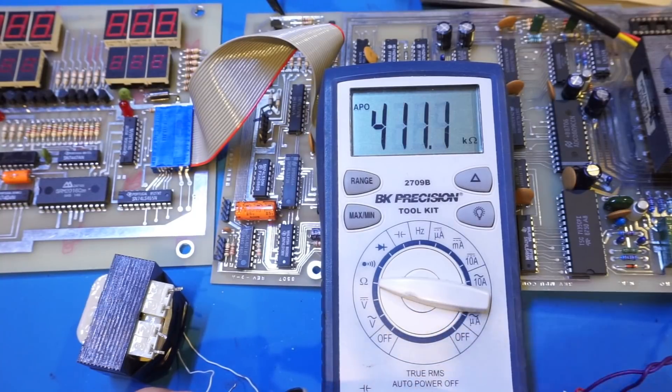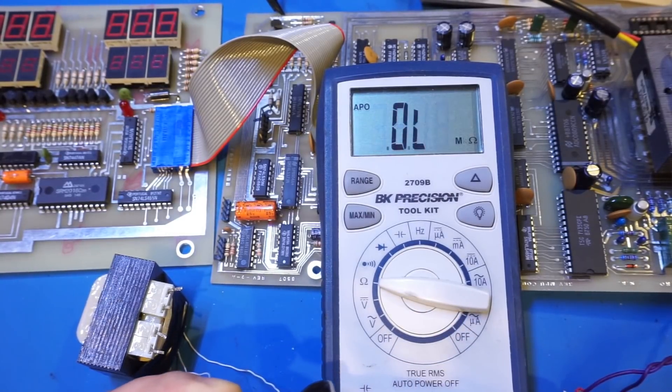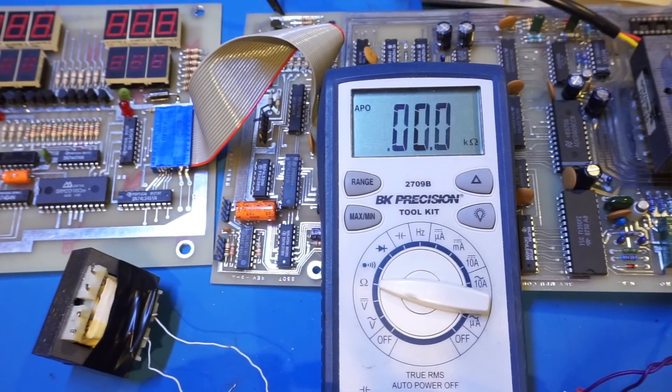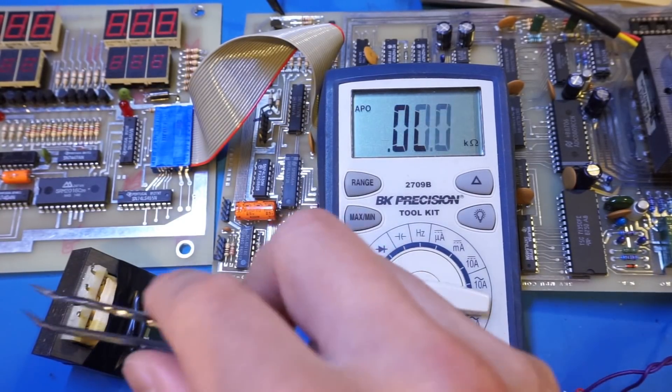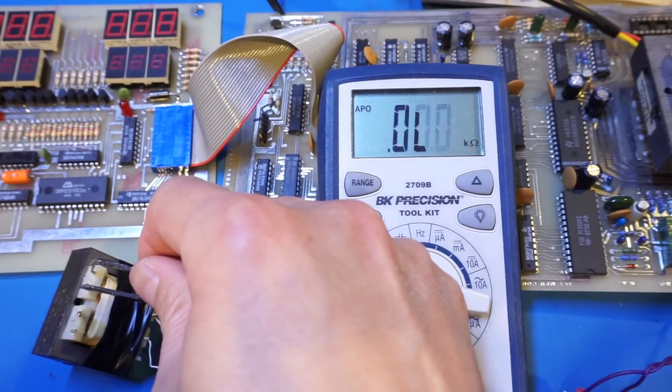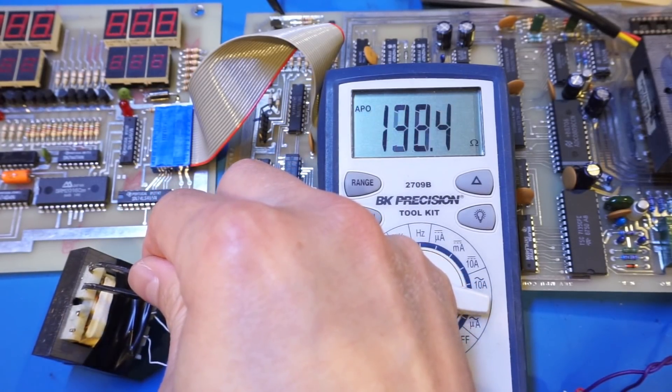And you can see that as soon as I short that side, it shows the correct reading. And of course, after I remove it, the reading goes high wire again. Now if I do it again, I'm going to be shorting the other side, and you can see that we also see the correct reading here.